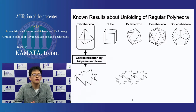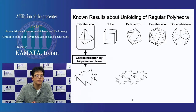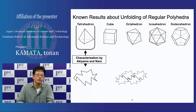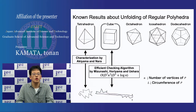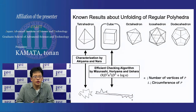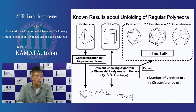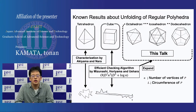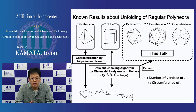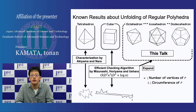For unfolding of the tetrahedron, a geometric characterization is known. For unfolding of the cube, an efficient checking algorithm is known. In this talk, I introduce an efficient checking algorithm for the octahedron, icosahedron, and dodecahedron.